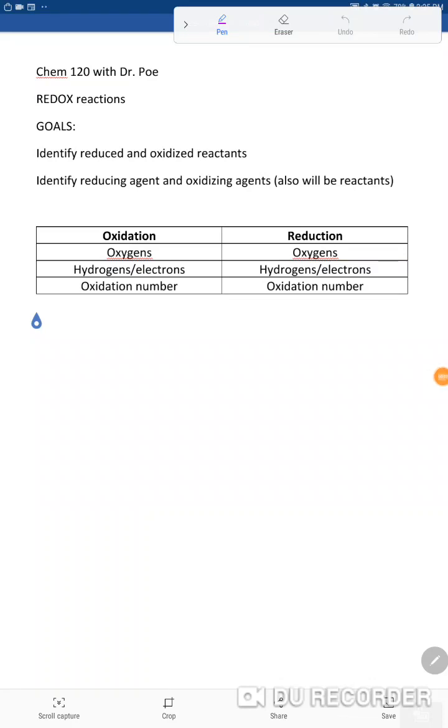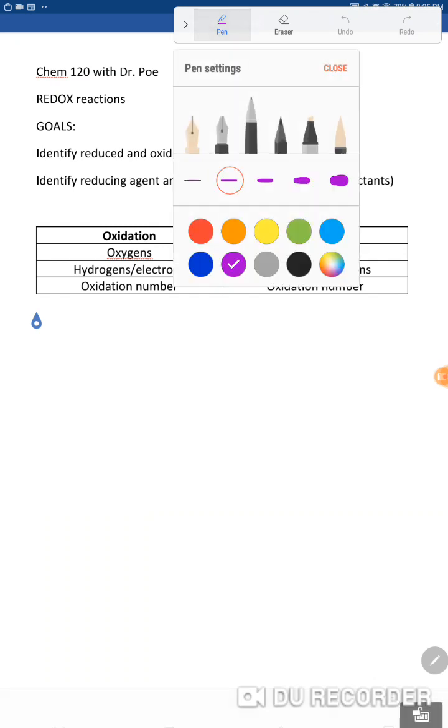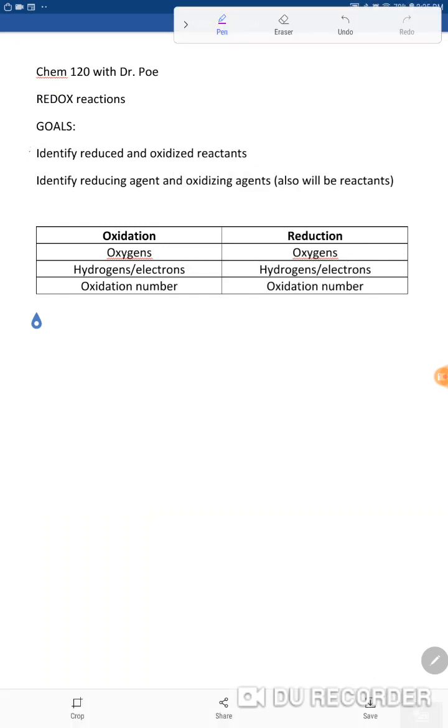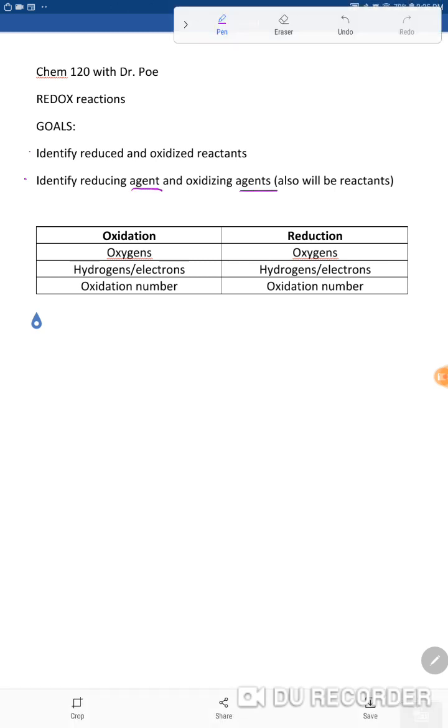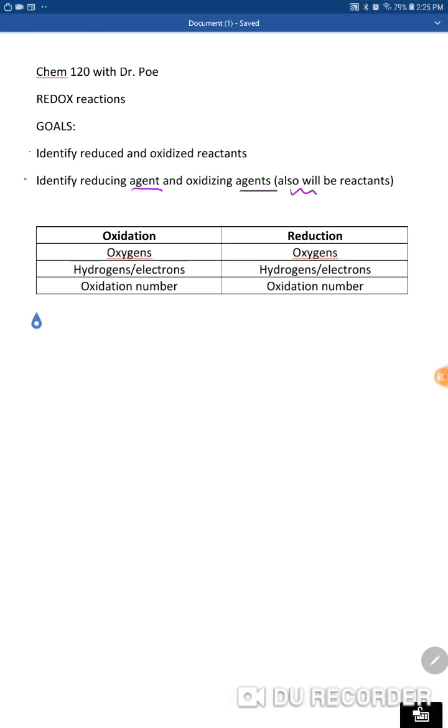Okay, in this video we are going to look at redox reactions with a couple goals. Goal number one is we are going to identify reduced and oxidized reactants. Goal number two is we're going to identify the reducing agent and oxidizing agent, which we're going to see is different than reduced and oxidized, but these are also going to be reactants. Just so that you remember, the reactants are on the left side and they go to products, which are on the right side.